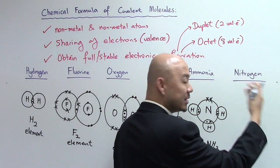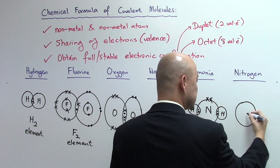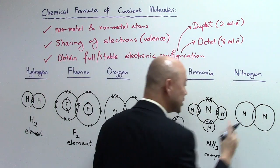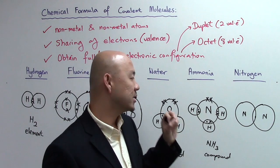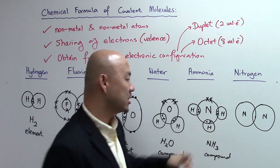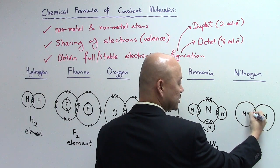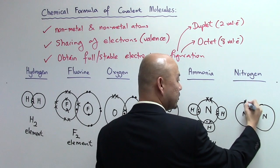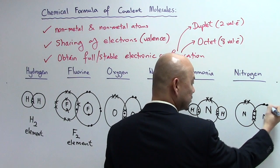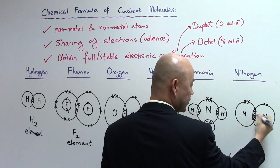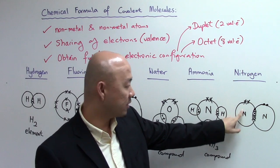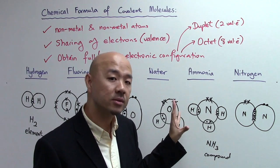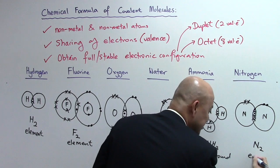The last example is nitrogen, which is an element. Nitrogen has five valence electrons per atom. To achieve a stable octet — eight valence electrons per atom — each nitrogen atom must contribute three valence electrons to the shared bond. After bonding, each nitrogen atom counts eight valence electrons and has the octet structure, making it a stable molecule. The formula is N2, and nitrogen is an element.